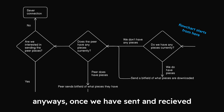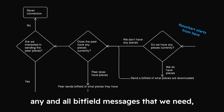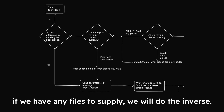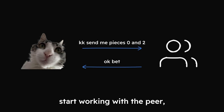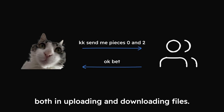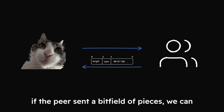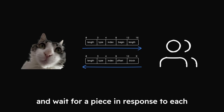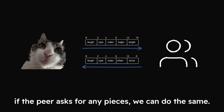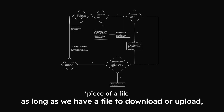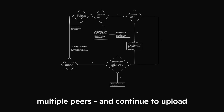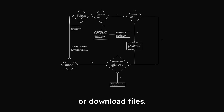Once we have sent and received any and all bitfield messages that we need, we can send an interested message and wait for and receive an unchoked message. If we have any files to supply, we will do the inverse. If these requests are successful, we can start working with the peer, both in uploading and downloading files. If the peer sent a bitfield of pieces, we can start requesting those pieces with a request and wait for a piece in response. As long as we have a file to download or upload and no connections are unintentionally severed, we can stay connected to the peer — or multiple peers — and continue to upload or download files.